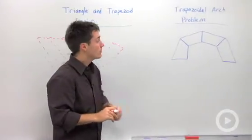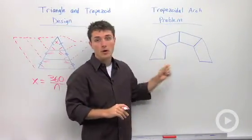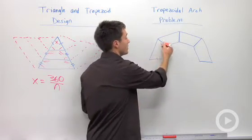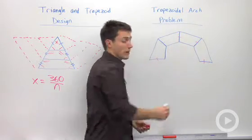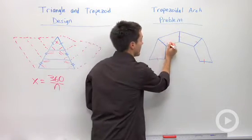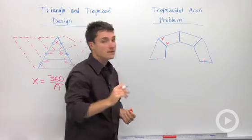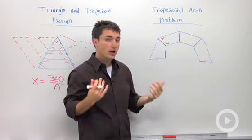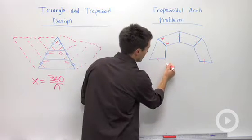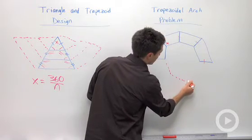The second key type of problem is the trapezoidal arch problem. In this one, you have congruent isosceles trapezoids that make up an arch, and you'll be asked to find the angles inside that trapezoid. You have to imagine this is part of a polygon that extends down below where you can't see.